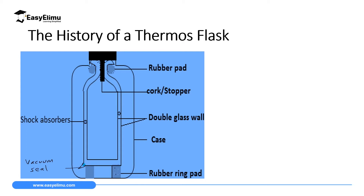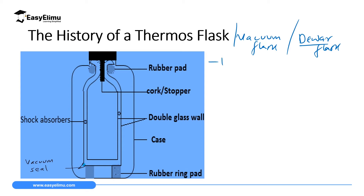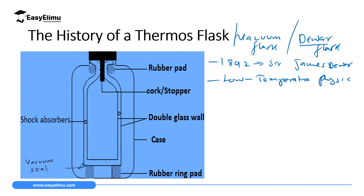Just a brief history of a thermos flask. A thermos flask is sometimes called a vacuum flask, or a dewar flask. We call it a dewar flask based on the name of the person who discovered it in 1892, a Scottish chemist and physicist called Sir James Dewar. Sir James Dewar was interested in low temperature physics, and his research was based on matter at extremely low temperature.